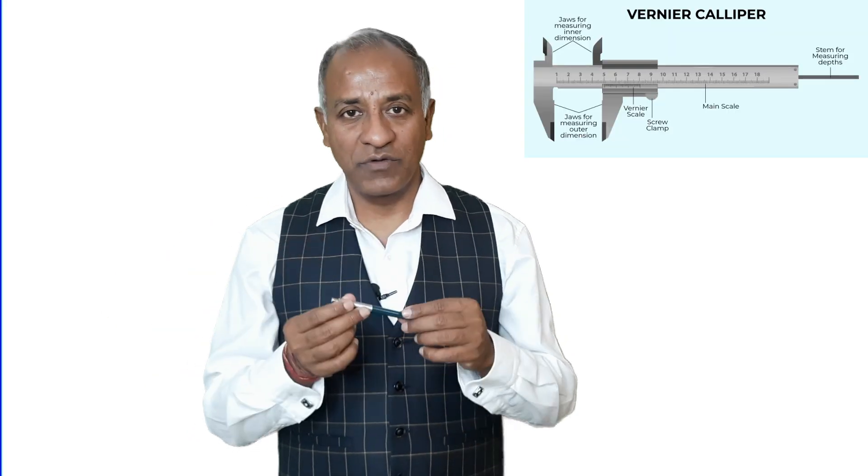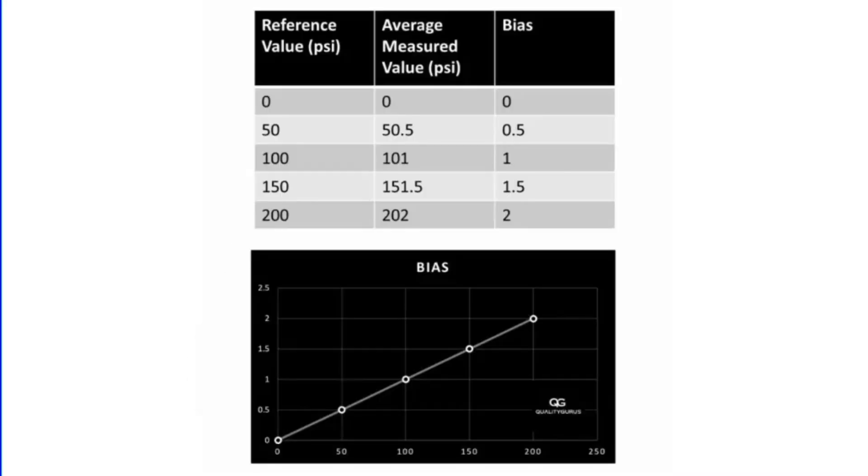Now linking it with linearity and stability — starting with linearity. When we talk about linearity, we are talking about the bias over the entire length of that particular instrument. For example, assume we have a vernier caliper and there are different dimensions from 0 to 200 mm. It's important to understand that there should be the same kind of variation when we are checking 0, 10, 20, 50, 100, or 200 mm. It should not happen that somewhere the variation is more and somewhere the variation is less. This is what we check in case of linearity — that over the entire range of the instrument, whether the variation is under control or going out of the limit.